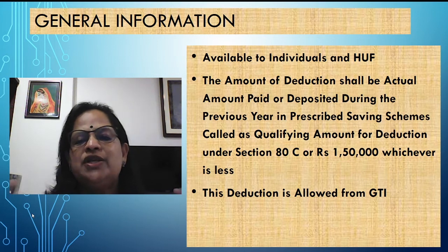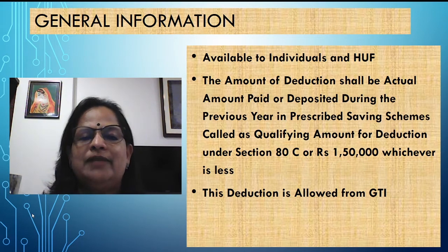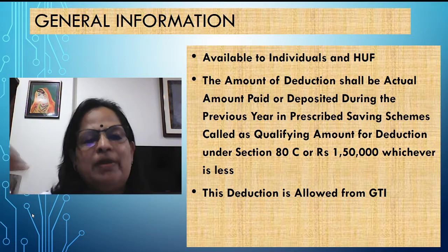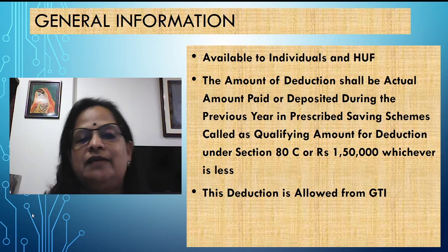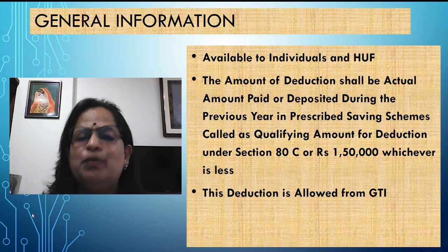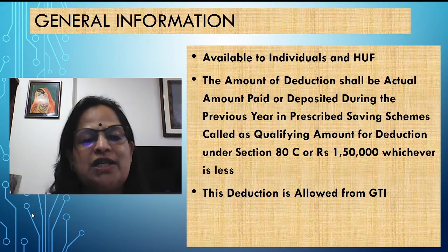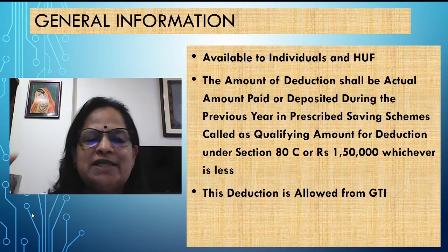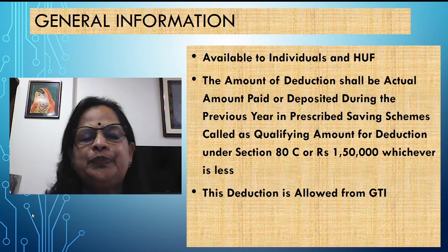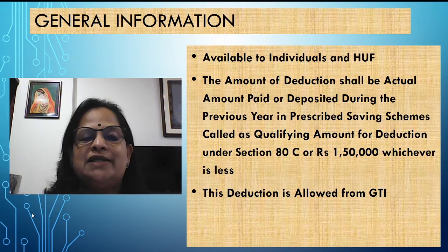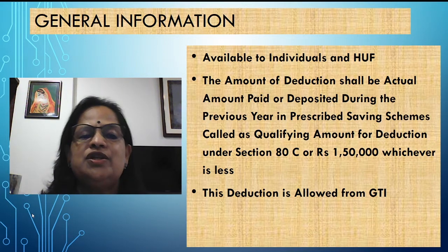This deduction is allowed from the gross total income. That is the title — deductions from gross total income. One by one, deductions we are taking and the first deduction is 80C. It is very popular and very commonly used by almost everybody, especially the salaried class. One side they are saving their income and at the same time they are reducing their tax liability. That is the merit of this savings scheme.